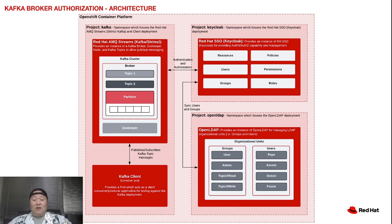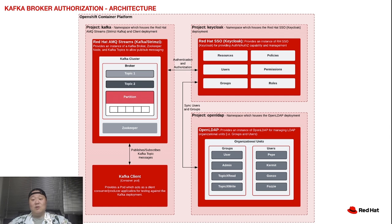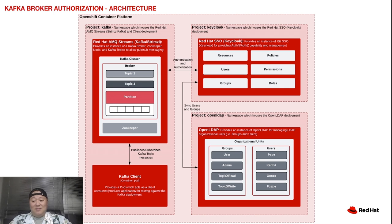Here in front of you is an architecture which describes the layout and deployments across three namespaces within an OpenShift cluster. The first namespace, named Kafka, is for deploying your Kafka cluster and a sample Kafka client test application. Another namespace, OpenLDAP, is for deploying your OpenLDAP server. And then finally, we have a Keycloak namespace, where we deploy our Keycloak SSO server.